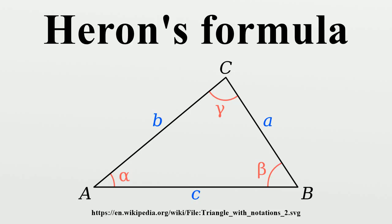Heron's formula is a special case of Brahmagupta's formula for the area of a cyclic quadrilateral. Heron's formula and Brahmagupta's formula are both special cases of Bretschneider's formula for the area of a quadrilateral. Heron's formula can be obtained from Brahmagupta's formula or Bretschneider's formula by setting one of the sides of the quadrilateral to zero.